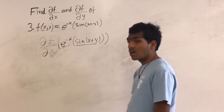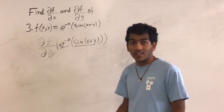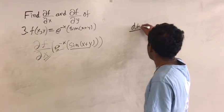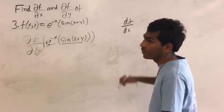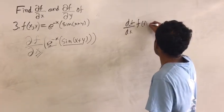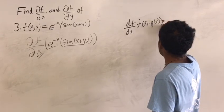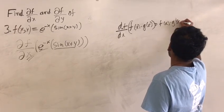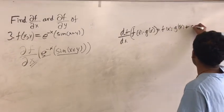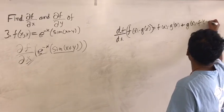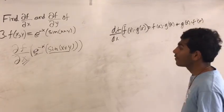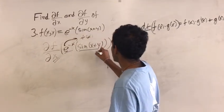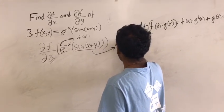So to differentiate this, I'll need to apply the product rule, as you guys might have learned in single variable calculus, where the derivative of a function with respect to x of f(x) and g(x) would be equal to f(x) times g'(x). So now let e to the negative x be my f(x), and let sine of x plus y be my g(x).